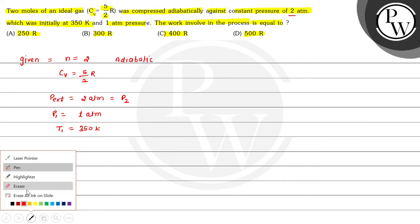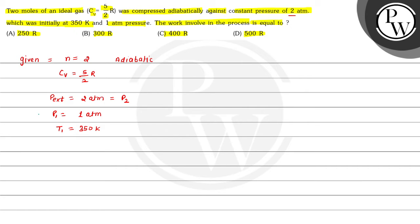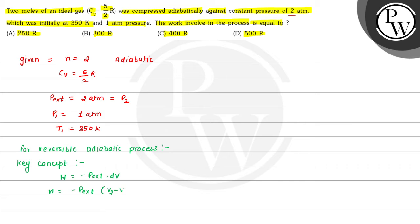Now we have to calculate work done. Here compression is taking place, so for an irreversible adiabatic process, the key concept is: W equals minus P_external times dV, where dV equals V2 minus V1. So W equals minus P_external times (V2 minus V1). Using the ideal gas equation PV equals nRT, volume equals nRT divided by P. Therefore W equals minus P_external times (nRT2/P2 minus nRT1/P1).